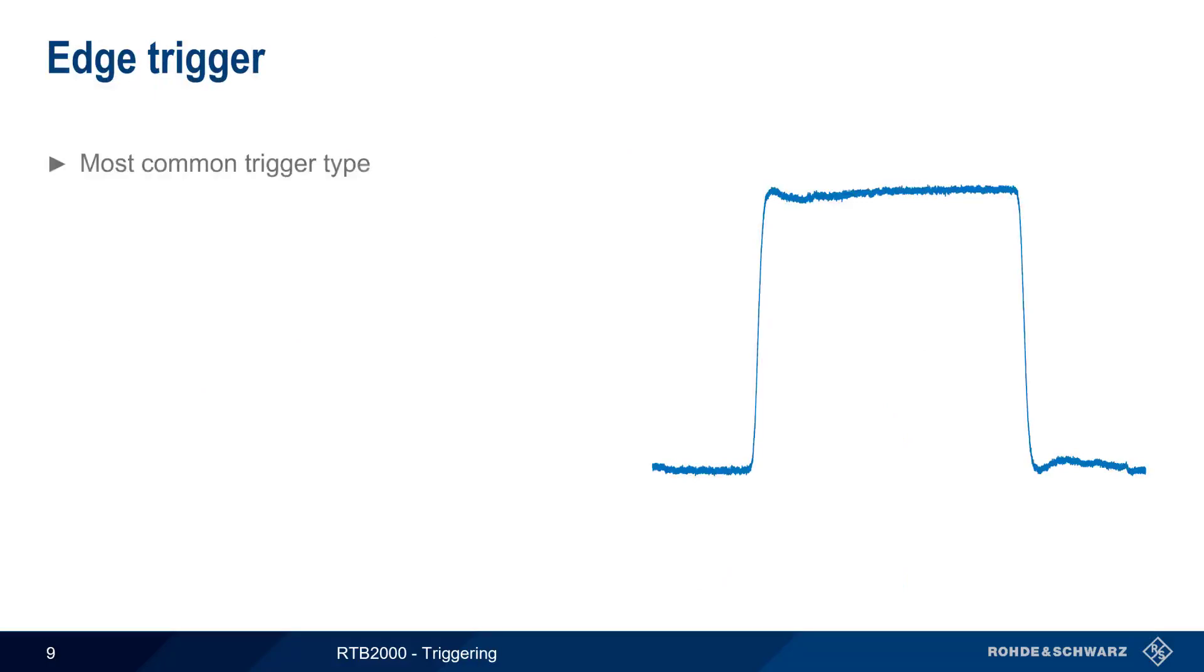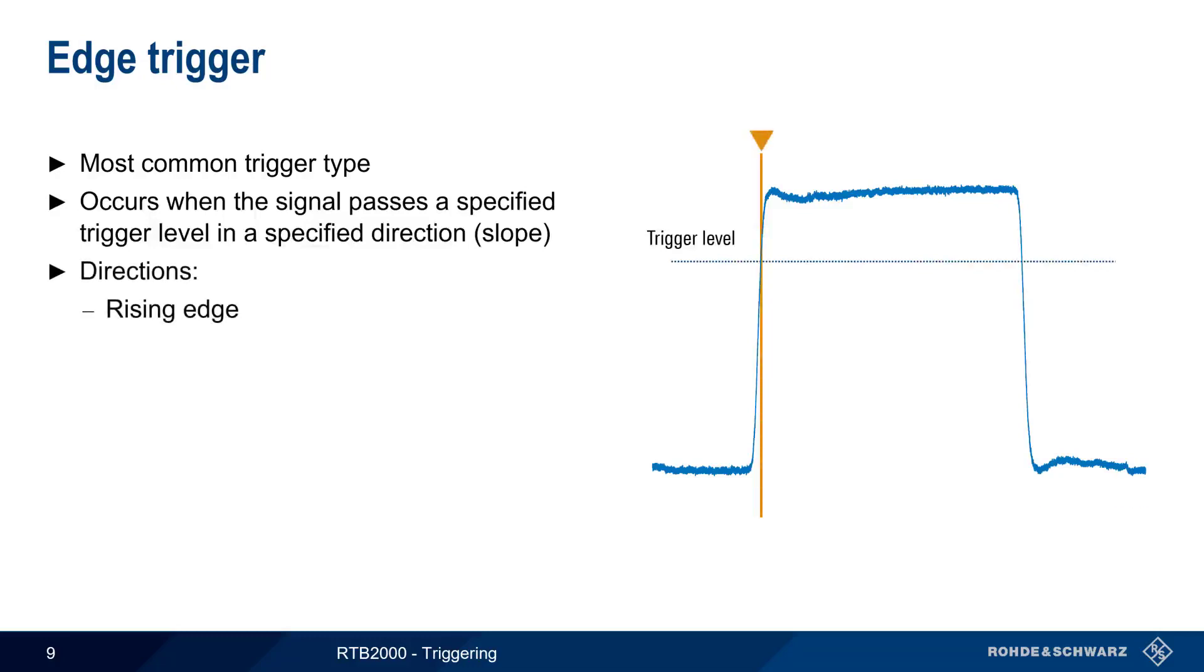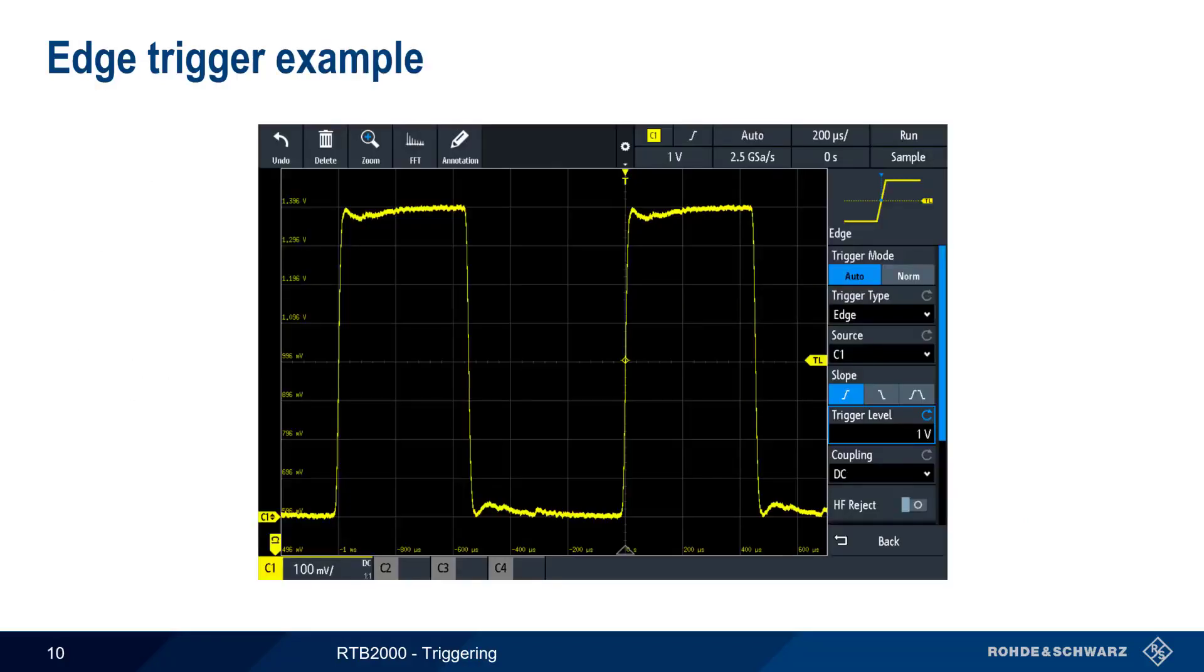We'll start with edge triggering, which is the most common type of oscilloscope trigger. An edge trigger occurs when the signal passes a specified trigger level with a specified direction or slope. These directions can be a rising edge, a falling edge, or either a rising or falling edge. Here's an example of an edge trigger. The trigger is set to a rising edge, and the trigger level, marked with the TL flag, is set to 1 volt. The trigger point is shown in the trace as a small yellow diamond, as well as by the yellow triangle marker at the top of the screen.